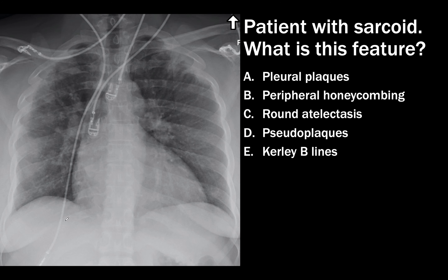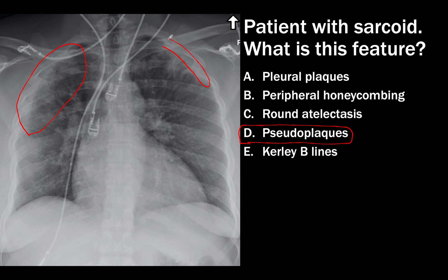Case 38. The patient has sarcoid, and the question asks what this feature is. From the Fleischner glossary, this is called a pseudoplaque. It looks like pleural plaques, but given the history of sarcoid, this abnormality is not in the pleura — it is in the subpleural part of the lung that abuts the pleura. It represents countless tiny sarcoid nodules conglomerating together along the pleura to form what looks like a plaque.